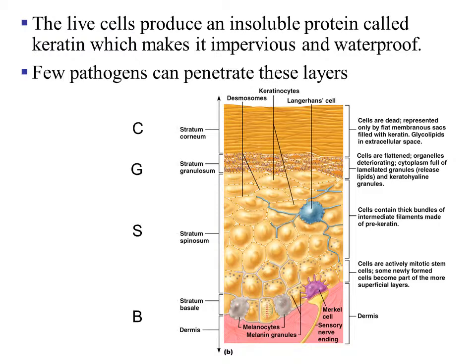The living cells produce an insoluble protein called keratin. Deeper in the epidermis, the stratum basalis and stratum spinosum layers produce this insoluble protein, which helps create an impenetrable layer and also waterproofs the tissue. Very few pathogens can actually penetrate this impenetrable wall created by the multi-tissue layer structure called the epidermis.